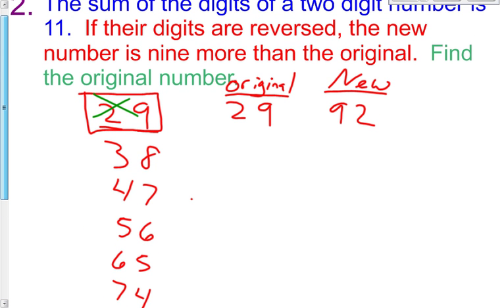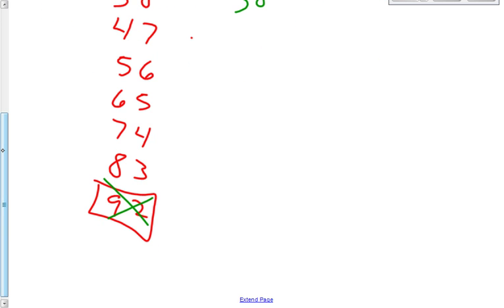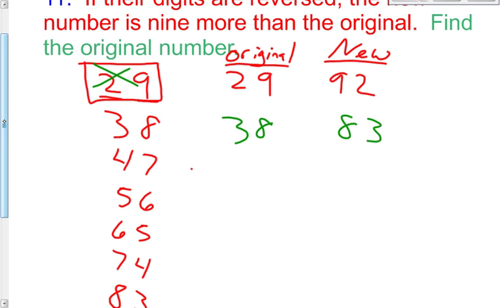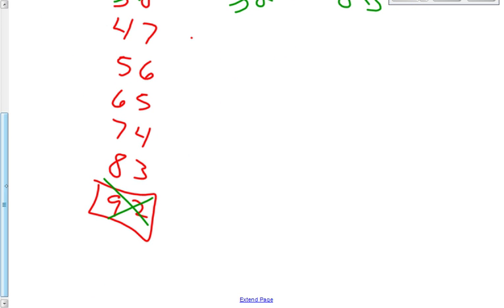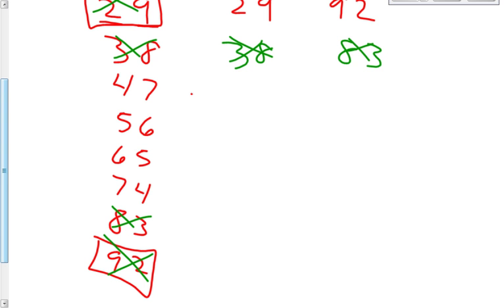So let's try another pair. The original is 38. If those digits are reversed, we now get 83. Is the new number nine more than the original? Absolutely not. So we know it's not this one. Keep on going. 47 and 74. As you can see, this difference is also not nine. So it's not this one.